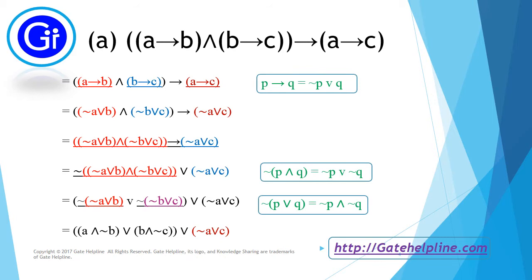Now we will see the explanation for option A. Option A is: (A→B) ∧ (B→C) → (A→C). We have divided this expression into three different colors — red, blue, and brown — and we are going to extract these using the formula P→Q = ¬P ∨ Q, which results in this expression.